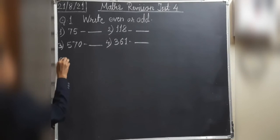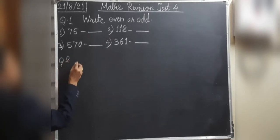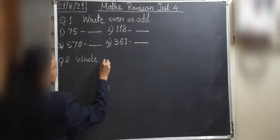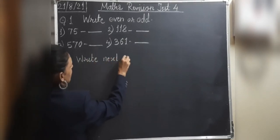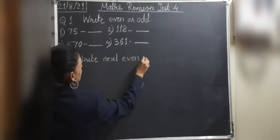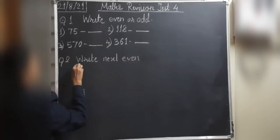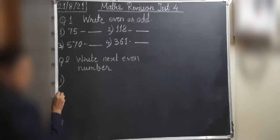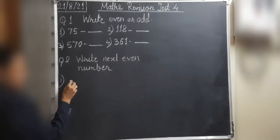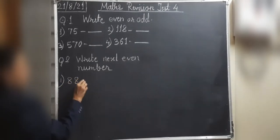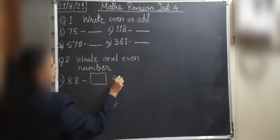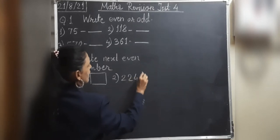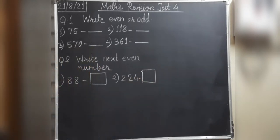Question number 2: Write the next even number. First number is 88 — write its next even number. Number 2 is 224 — write its next even number.